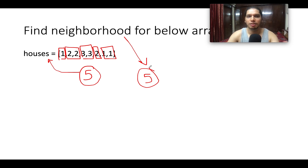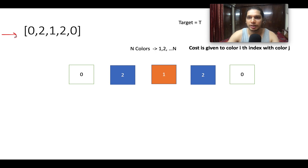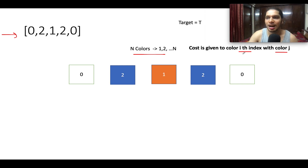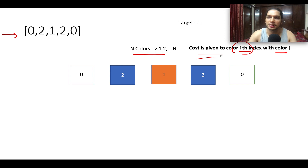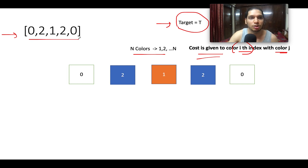Now let's iterate over the question. You are given various houses, some of which are not painted. You are also told the number of colors available, ranging from 1 to n, meaning you can color all non-painted houses with any color from 1 to n. You are also given the cost to color the i-th house with color j, where j varies from 1 to n and i varies across all houses — this information is given in the form of an array. The question also specifies that after coloring all houses, the total number of groups formed should be equal to target. In the given example, the houses configuration is 0, 2, 1, 2, 0 — where 0 means unpainted, 2 means blue, and 1 means orange.